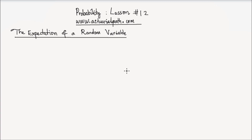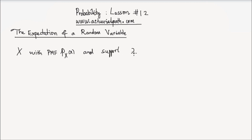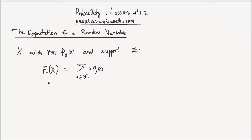In this lesson, we will start with the expectation of discrete random variables, and then describe the expectation of continuous random variables. Let x be a discrete random variable with PMF — Probability Mass Function — P_x(x), and support script X. The expectation of x, denoted E[x], is equal to the sum over all values in the support of x times P_x(x). That is the expectation of the discrete random variable x.